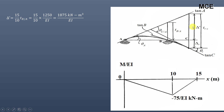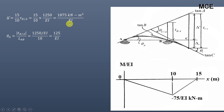Using similar triangles, delta_dash divided by t_ba equals 15 divided by 10, where 15 is the total span. Since t_ba = 1250/EI, delta_dash = (15/10) × 1250/EI = 1875/EI. Then theta_a is simply t_ba divided by the length AB: theta_a = (1250/EI) / 10 = 125/EI.